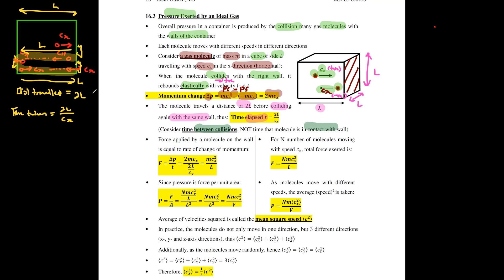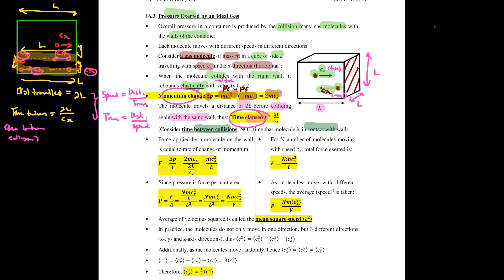This comes from the equation: speed equals distance over time, so time equals distance over speed. Your speed is Cx throughout — it is constant. Therefore the time between collisions is 2L over Cx. Now that you have the momentum change and the time between collisions, you can find the force exerted by this single gas molecule on the wall.